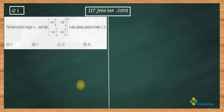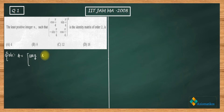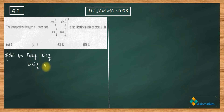Let me write your matrix. The matrix A is given as: cos(π/4), sin(π/4) in the first row, and −sin(π/4), cos(π/4) in the second row. This is a rotation matrix.